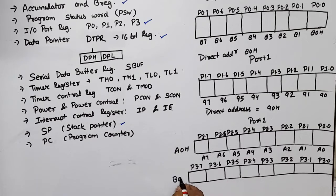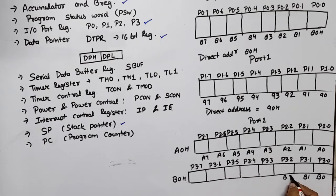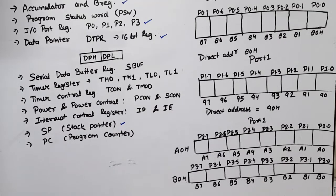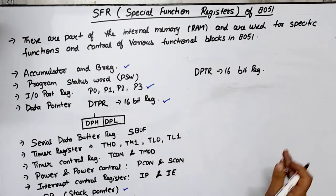For Port 3, the bit-wise addresses are B0, B1, B2, B3, B4, B5, B6, and B7. This covers all input/output port registers: P0, P1, P2, and P3. Now for DPTR — it is a 16-bit register that holds the 16-bit address of external memory.